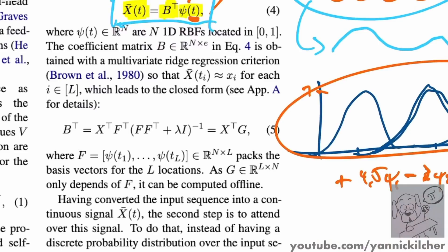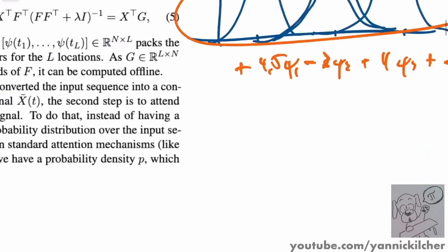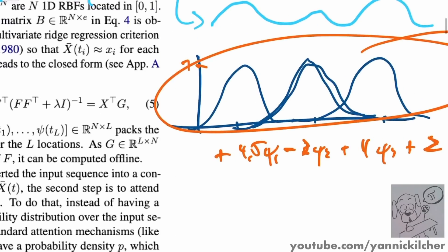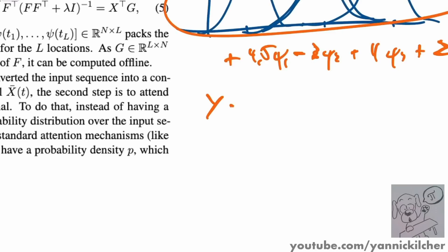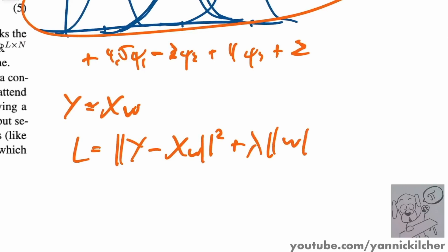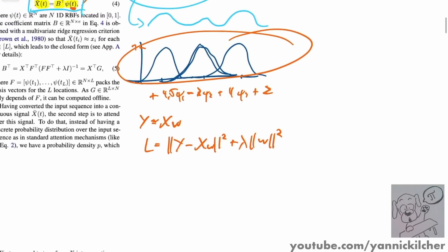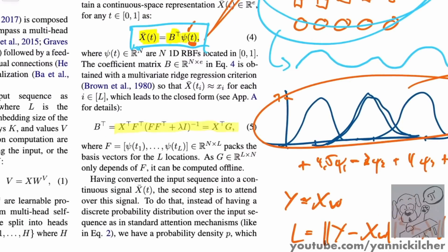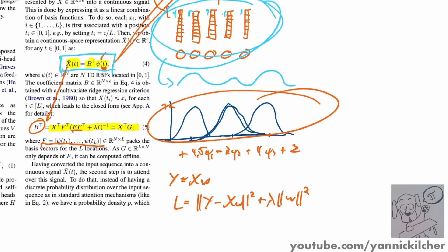The way you transform the concrete signal into the continuous one is by running a regression — specifically a ridge regression, which is a regression with an L2 penalty. You solve y = Xw, minimizing the squared distance plus a regularization constant on the L2 norm of the weights. There is a closed-form solution for ridge regression, with F being the matrix containing the basis vectors. This gives you the B matrix — transforming X, which depends on sequence length, into B, which only has as many entries as you have basis vectors.